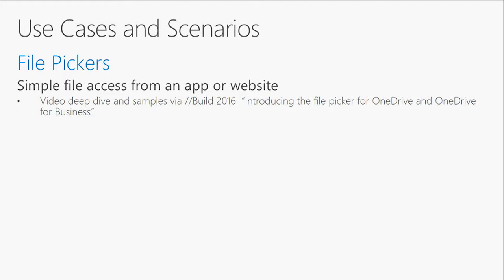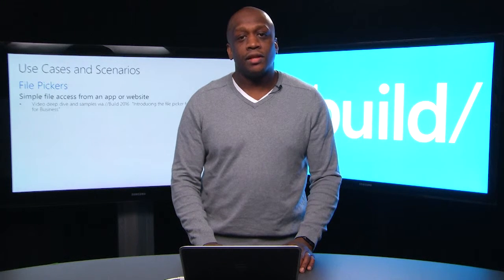Let's take a closer look at some of the key use cases for file access and management for consumers and enterprises that you can enable with the OneDrive API. First, the simplest scenario is simple file access — the ability to open and save back a file to a user's OneDrive, leveraging the OneDrive File Explorer experience. The fastest and easiest way to get started is by using our file picker tools.